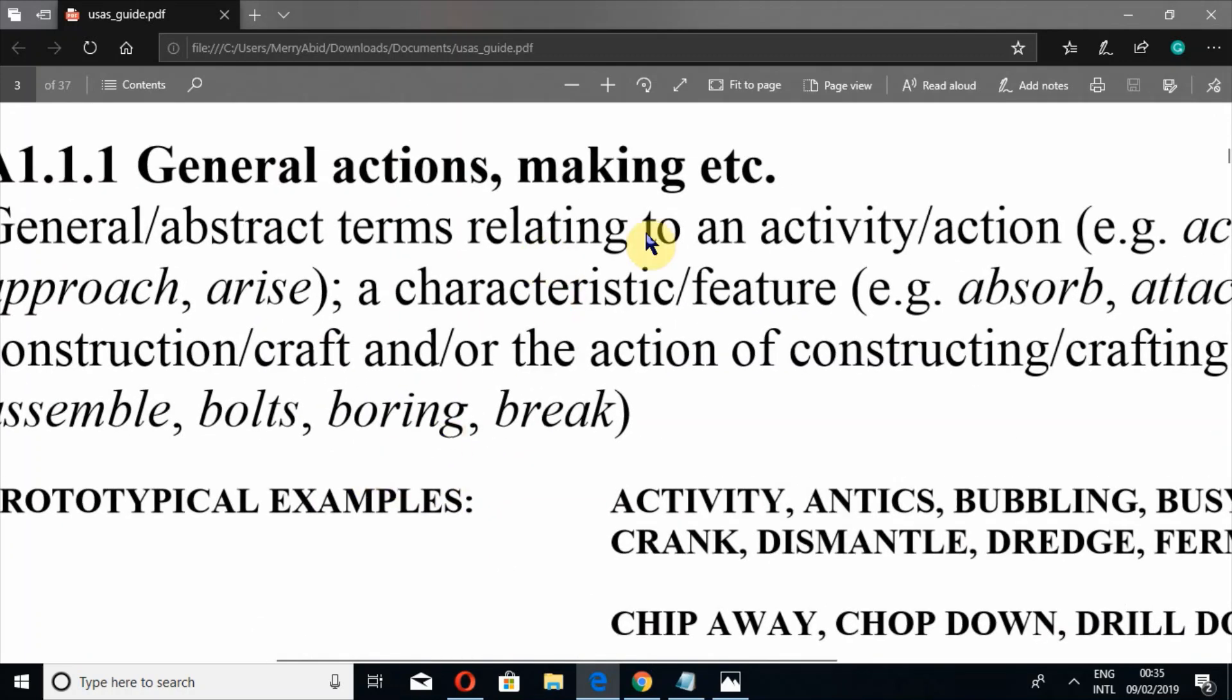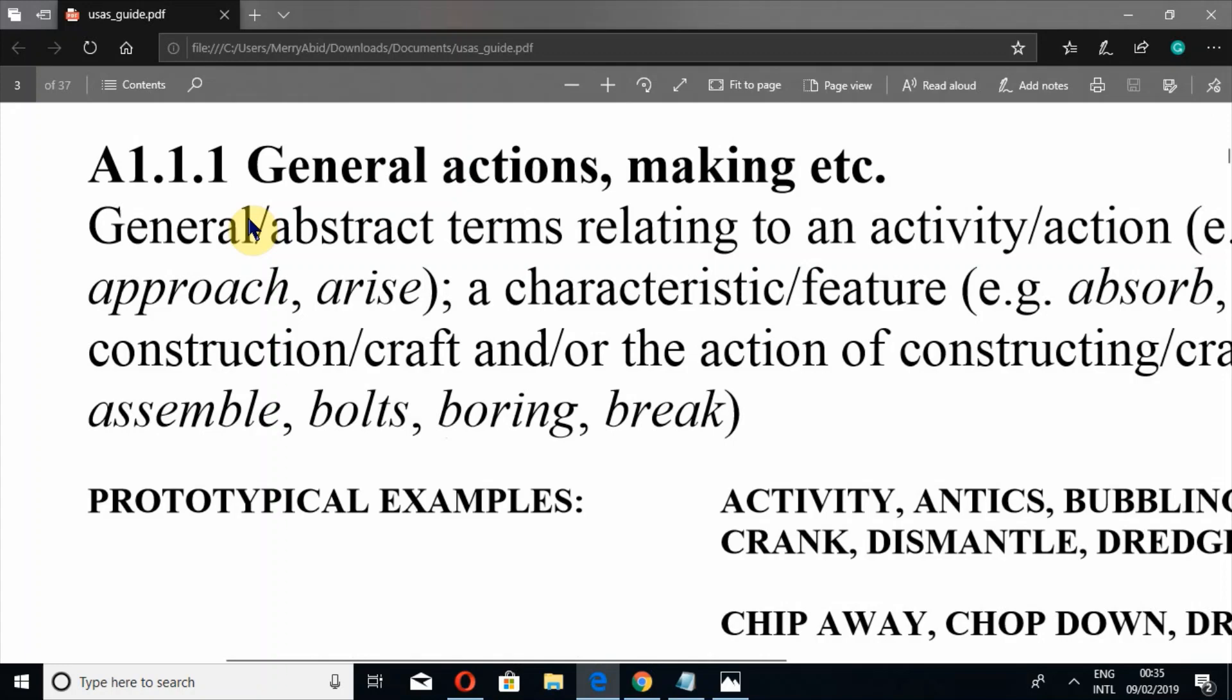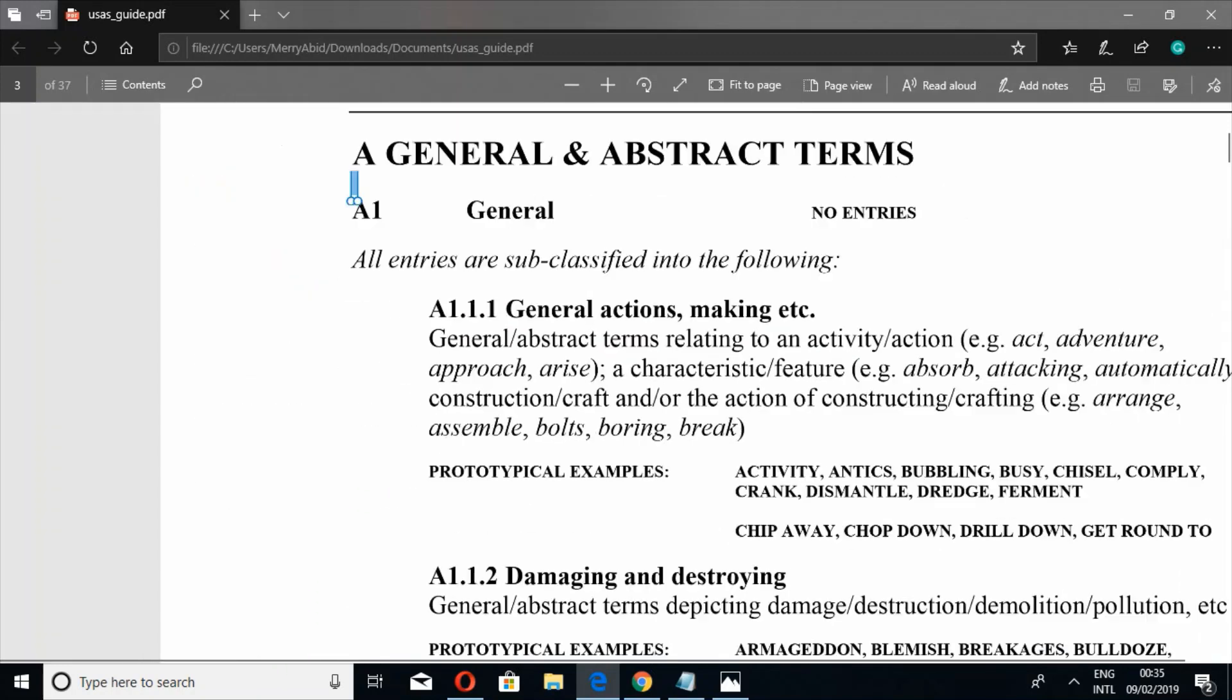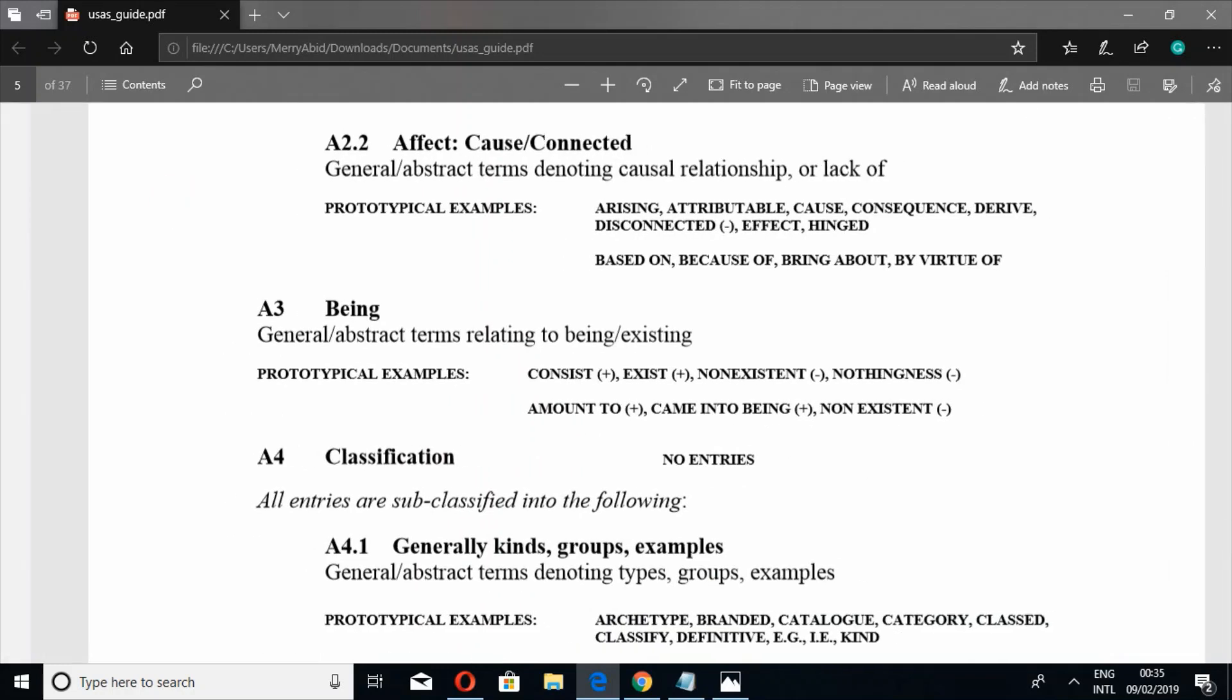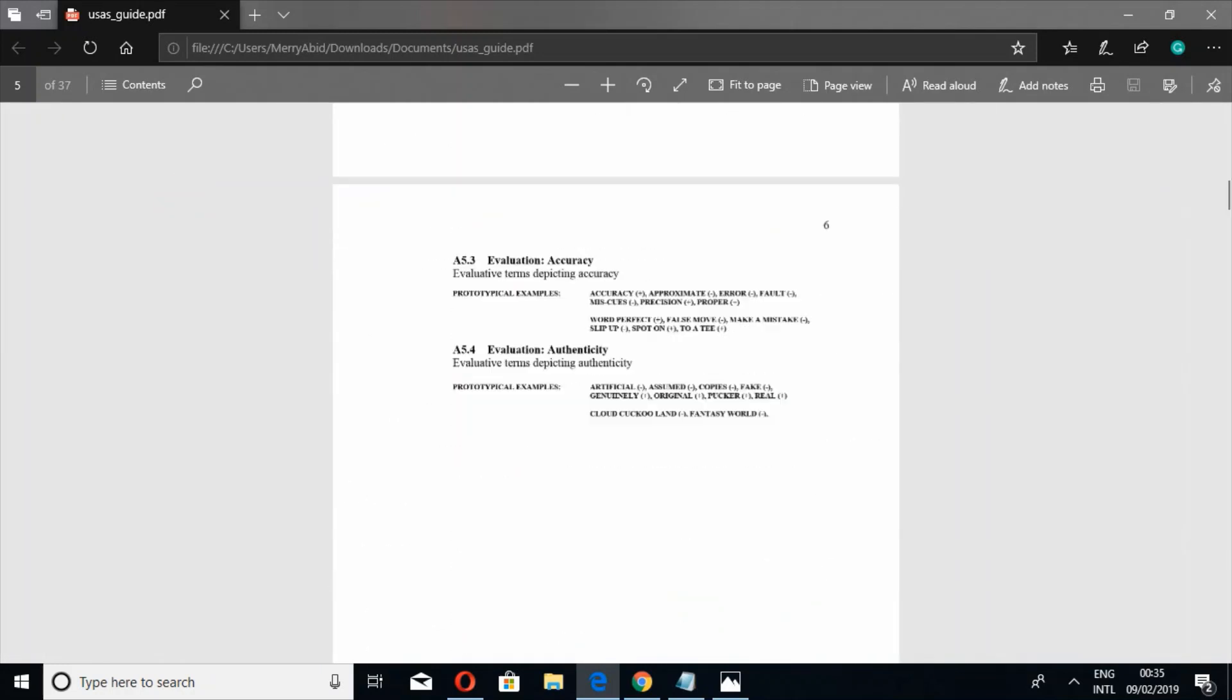These are the detailed descriptions of each of the tag. For example, A1 is general, so all general entities, all these words which are related to these words and have these semantic senses, they will be tagged to A1.1.1. And then there is the further categorization. So let's move to G3 first.